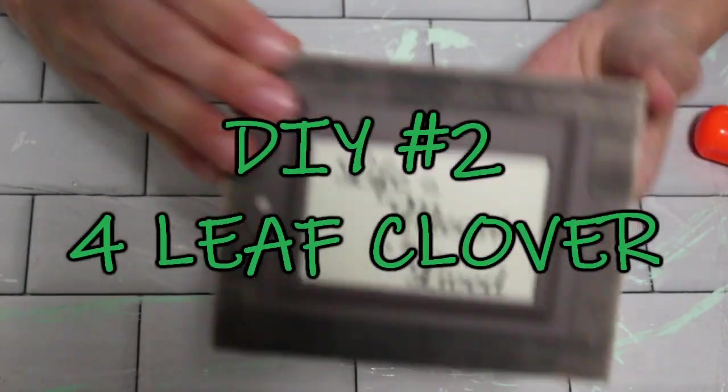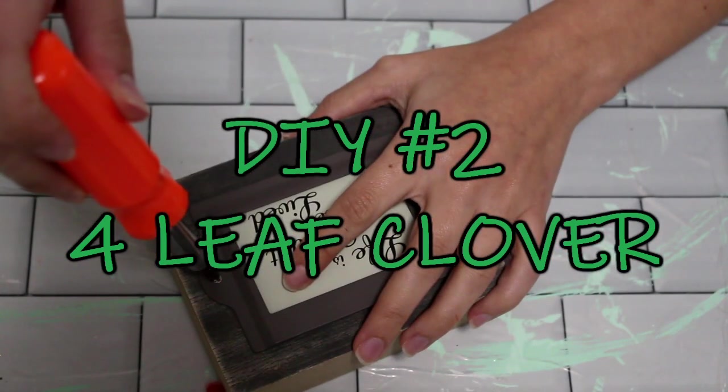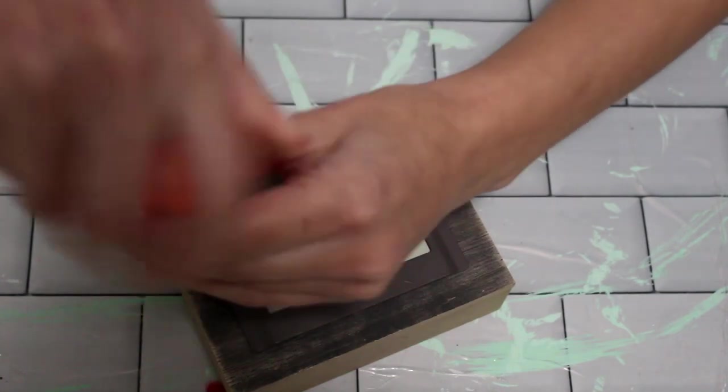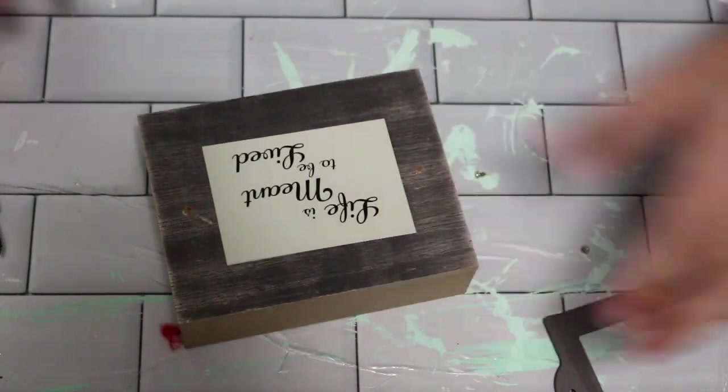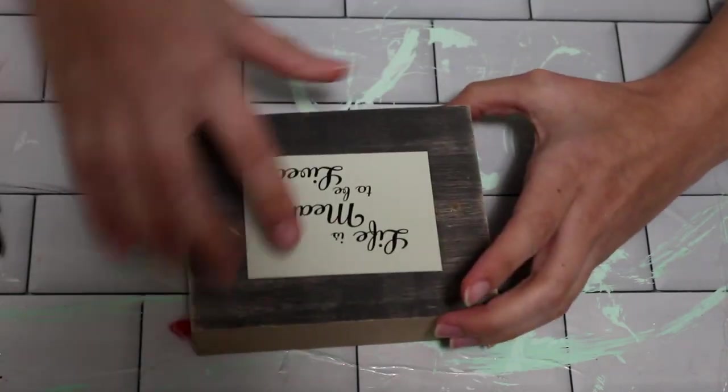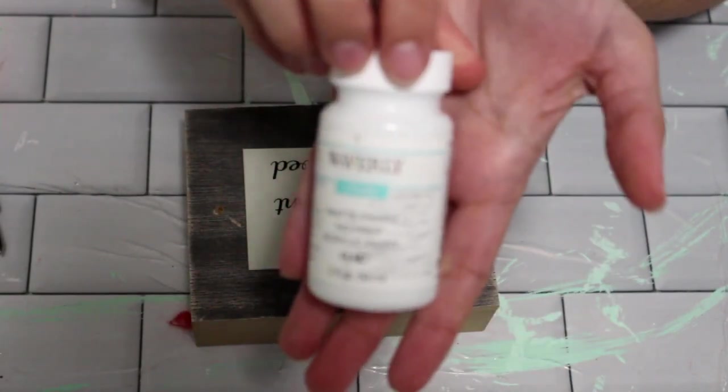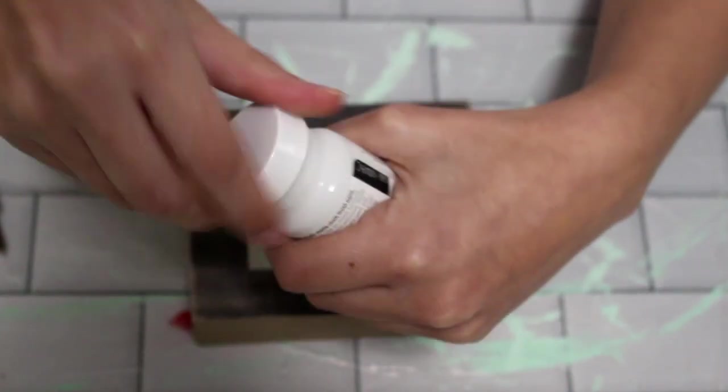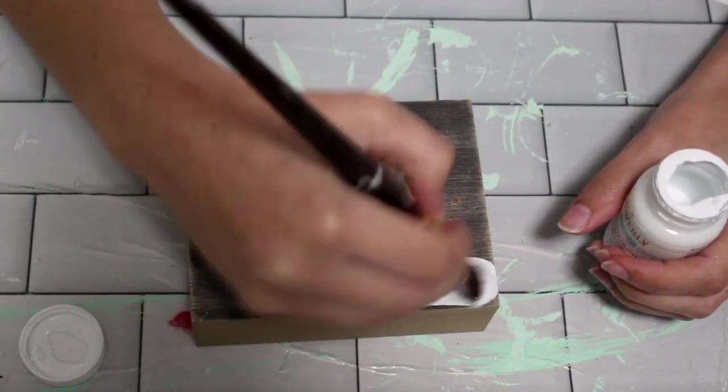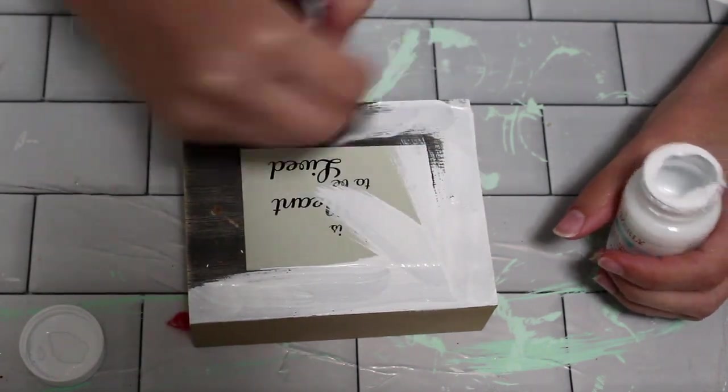All right you guys, on to DIY number two. Now this one is going to be super simple and it would be perfect in a tier tray. What I did is I took the shadow box that has that metal tag on it and I just removed the metal tag. Then I took the box itself and I used some white paint, I'm using the Waverly chalk paint in white, and I gave this box about two to three layers of paint. And don't forget to do the sides as well.